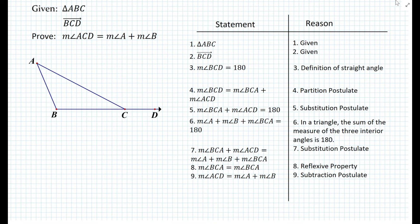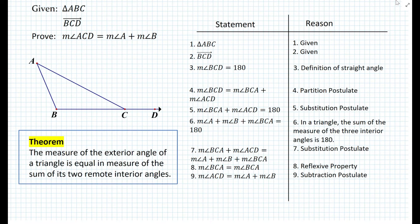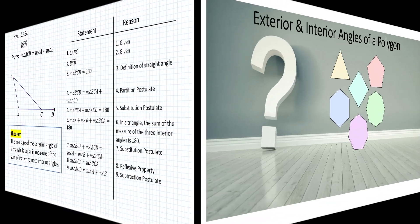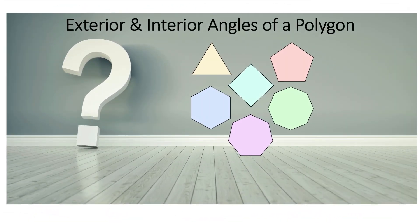So our hypothesis was true. We can now formalize this into one conditional statement. The theorem states: the measure of the exterior angle of a triangle is equal to the sum of its remote interior angles. So we just finished formulating a theorem based on the exterior angle of a triangle. But what about interior and exterior angles of polygons? Is there a relationship as well? Let's investigate this in today's lesson.